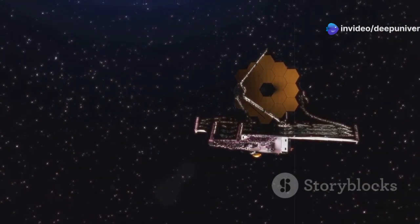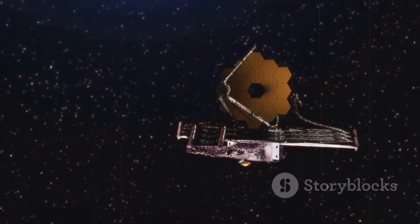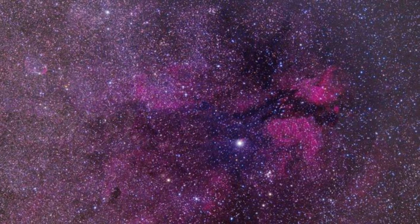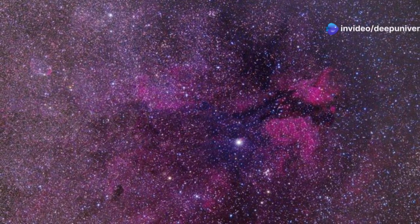JWST orbits the sun at a special location called the second Lagrange point, about a million miles from Earth. This vantage point provides the telescope with a clear and unobstructed view of the cosmos.